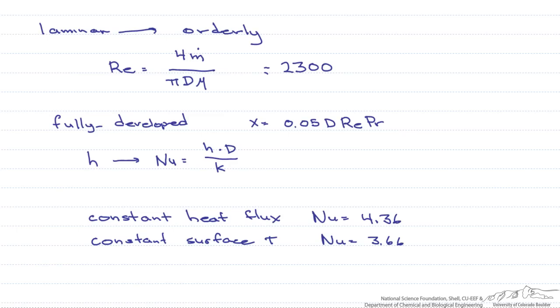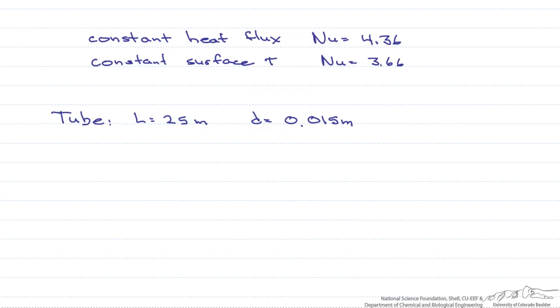Let's take a look at an example. We'll have a tube that has a length of 25 meters and a diameter of 15 millimeters. We're going to assume a constant surface temperature of 100 degrees C. And we're going to have a fluid that has a mass flow rate of 0.25 kilograms per second.